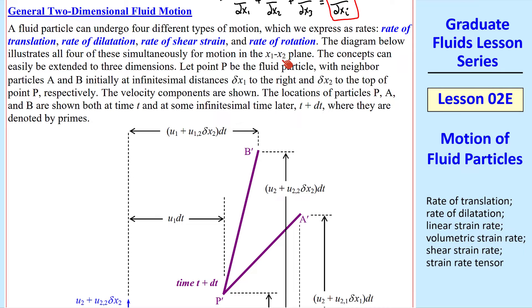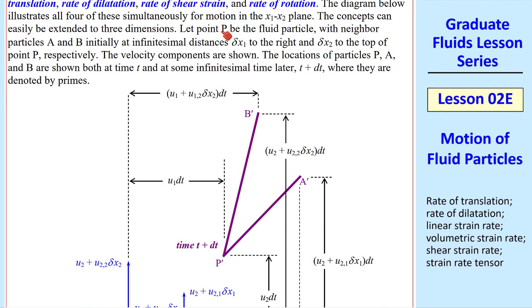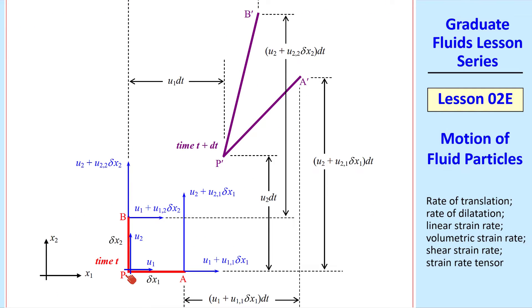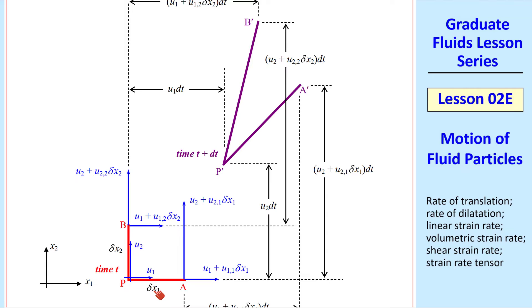Again, this is for 2D flow in the x1, x2 plane. We can easily extend to three dimensions. We let point P be the fluid particle with neighbor particles A and B, as shown here. Here's point P, A is to the right and B is up at distances delta x1 and delta x2. This is at time t.